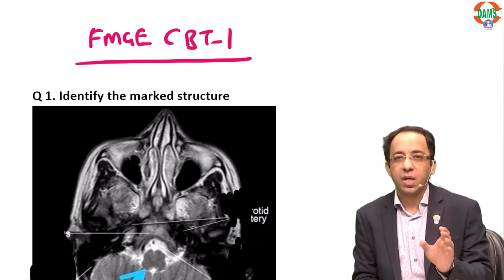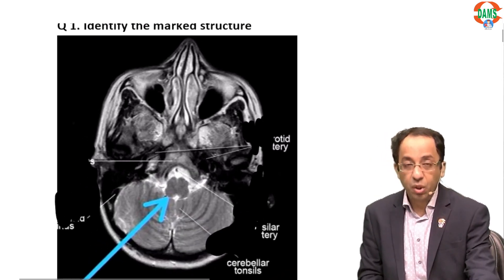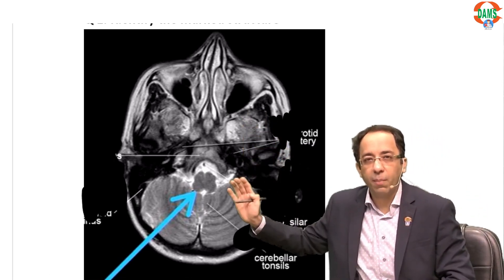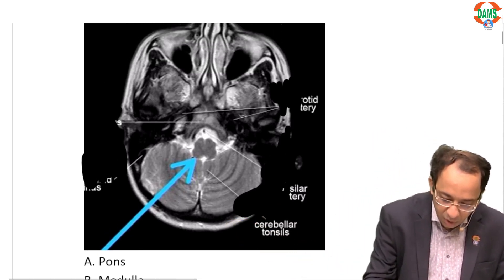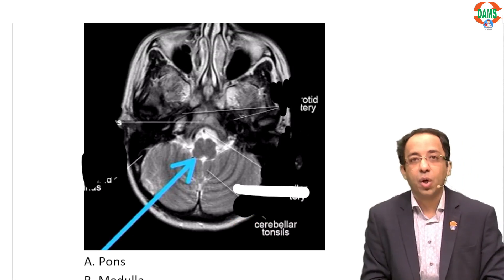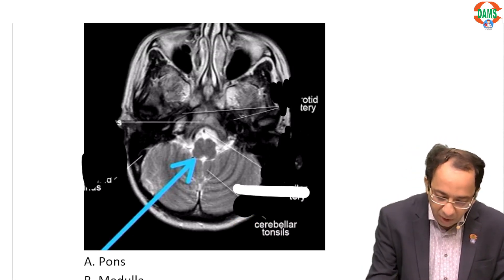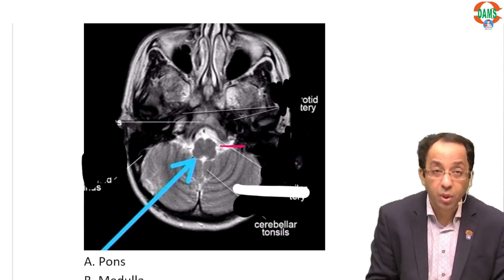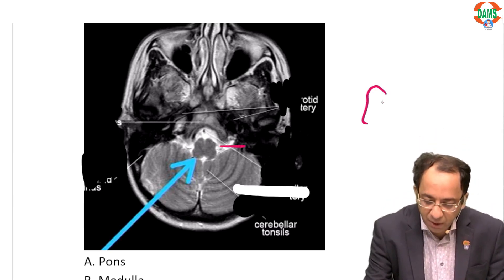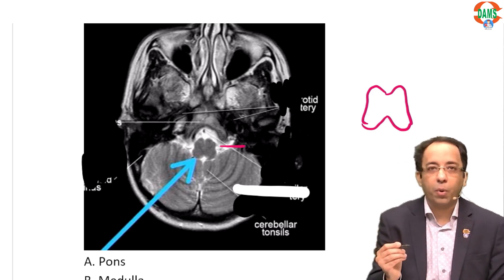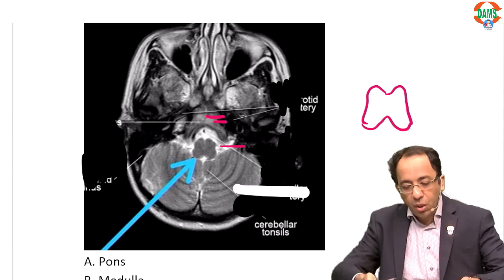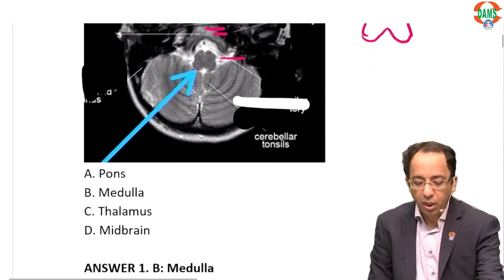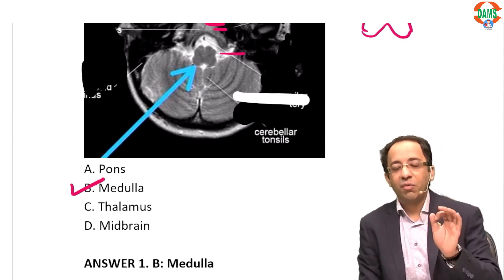One type of question they always ask is: identify the structure. Look at this T2-weighted MRI image. This particular area is your cerebellum, and where the arrow is pointing, look at the shape of the structure — it has the shape of the medulla oblongata. We are at the lower part of the skull; you can see the lower part of the cerebellum and the medulla oblongata. The answer is medulla.